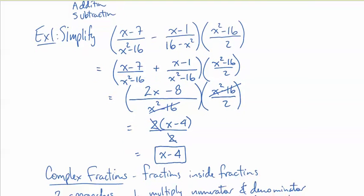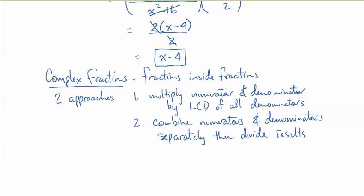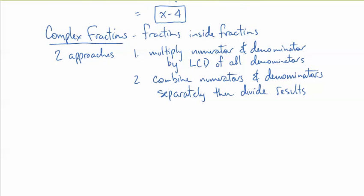A more complicated situation is one like this: complex fractions. Now, complex fractions occur when we have fractions inside of fractions. There are two different approaches we can take. One is to multiply the numerator and denominator by the LCD of all of the denominators that exist. The other option is to combine numerators and denominators separately, then divide the results.